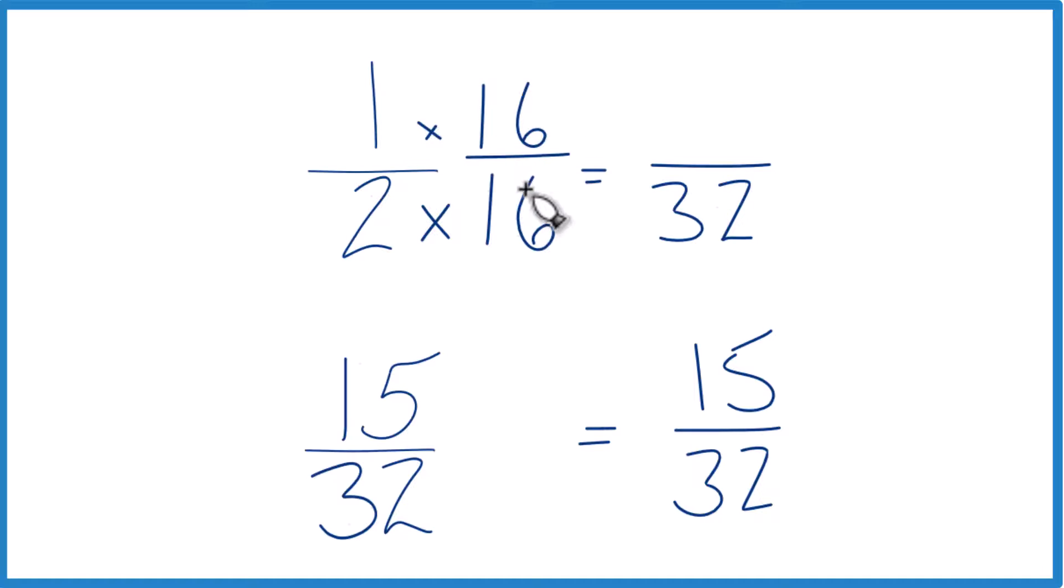16 over 16, that's 1. So we're just multiplying by 1. We don't change the value, just the way it's represented. 1 times 16 is 16, and that's the same as 1 half. They're equivalent fractions. But now we have the same denominator.